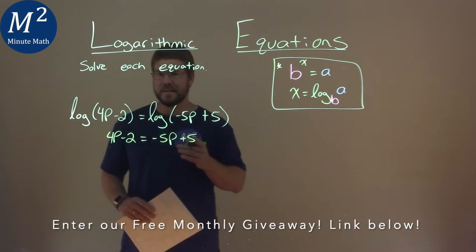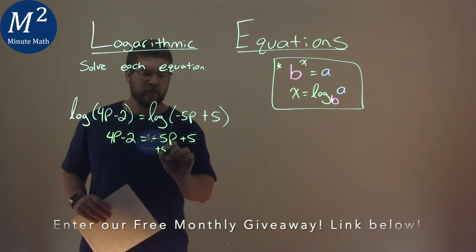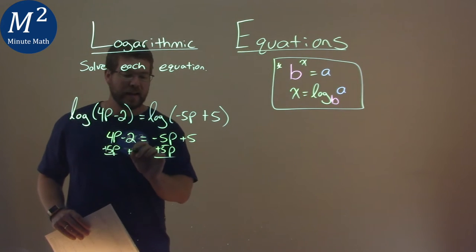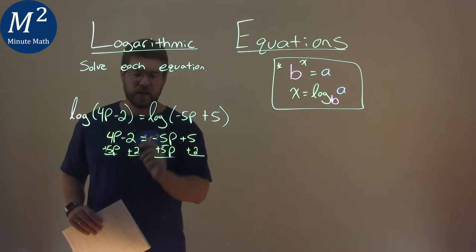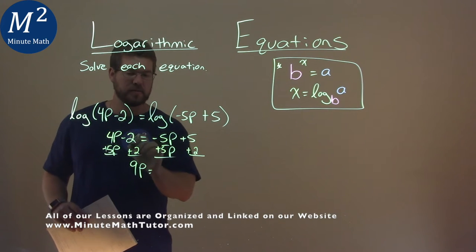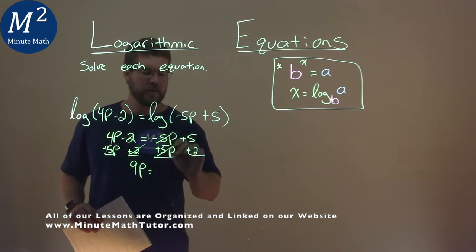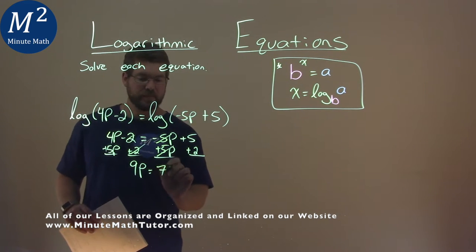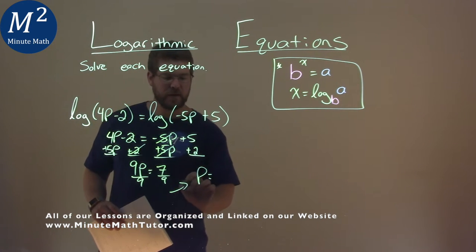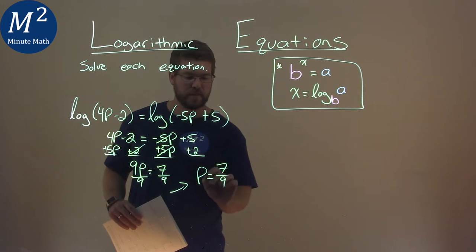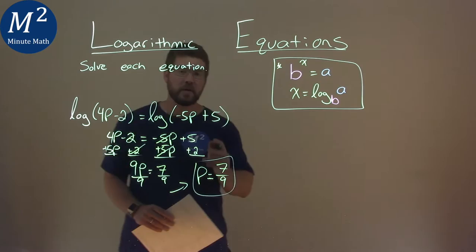Now this is much easier to solve. I add 5p to both sides and I add 2 as well. 4p plus 5p is 9p. The 2s cancel and the 5ps cancel. 5 plus 2 is 7. I divide both sides by 9, and I have p by itself. p equals 7 over 9, and that is our final answer.